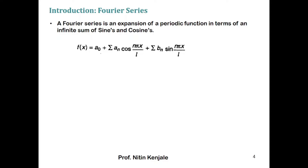It is given by f(x) = a₀ + summation of aₙ cos(nπx/l) + summation of bₙ sin(nπx/l). Here you can see that the function f(x) is written as an infinite sum of sine and cosine functions. We will talk about a₀, aₙ, and bₙ on further slides.